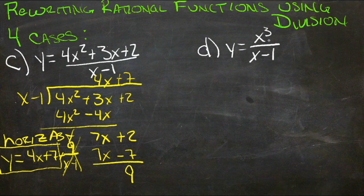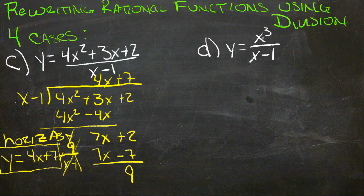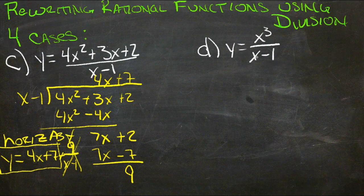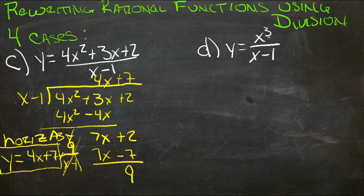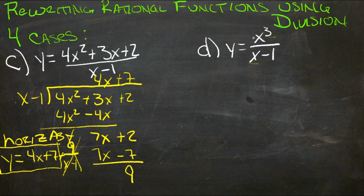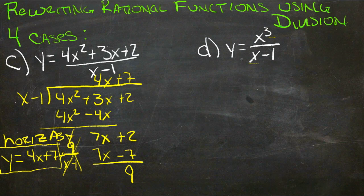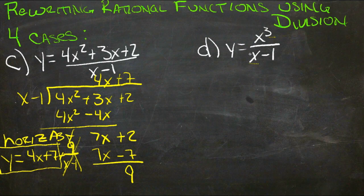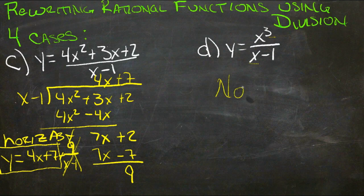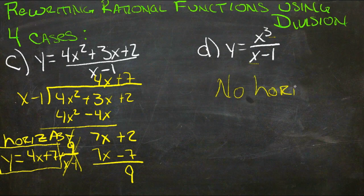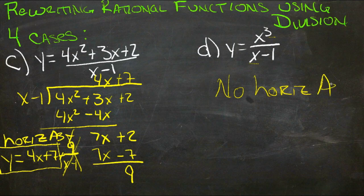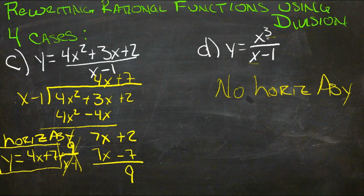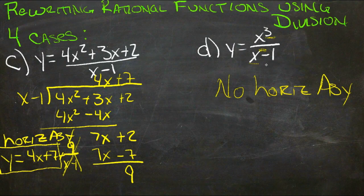And then for d, because our power up on top here is more than one power greater than the one on the bottom, we have an x to the third and an x to the first, this does not have an asymptote. There isn't a number that y approaches without hitting, so this one has no horizontal asymptotes. And that's easy to identify, just by seeing that the power on the numerator is more than one greater than the power in the denominator.